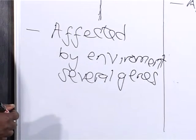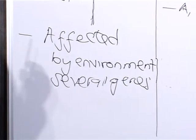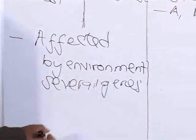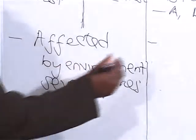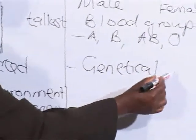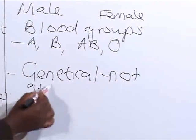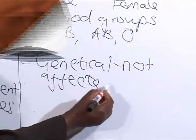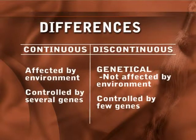The other difference is that continuous variation is affected by the environment and is controlled by several genes, while discontinuous variation is genetical and is not affected by the environment. It is controlled by few genes.